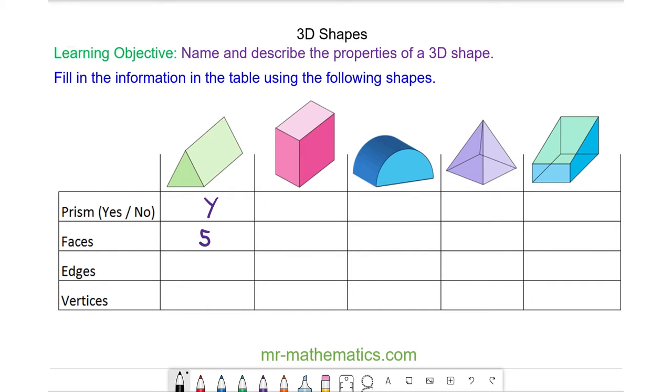An edge is a line which connects vertices together. So here we have one, two, three, four, five. We have another one here that we can't see because this is hidden, seven, eight and nine. So a triangular prism has nine edges.